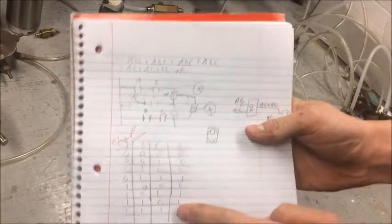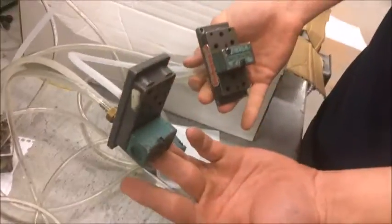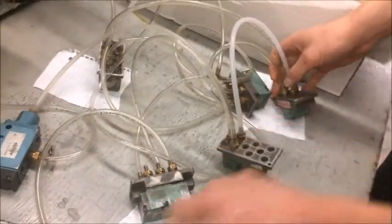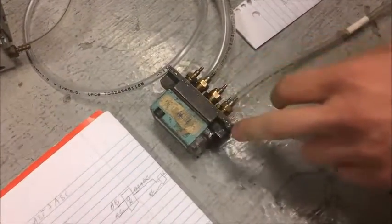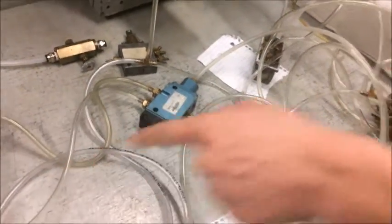This is our truth table here. This is our logic gates here. What we did was we used two shuttle valves and four pneumatic relays and put it into a pilot-operated valve into making it rotary action.